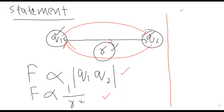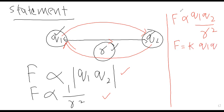Now combining both statements: what is directly proportional goes to the numerator, what is inversely proportional goes to the denominator. So F is proportional to Q₁Q₂ / r². Removing the proportionality sign, we introduce a constant k, giving F = kQ₁Q₂ / r². What this constant k is and how force can vary — all these things we will continue in the third lecture. I hope today's lecture was clearly understood. If you have any confusion, you may ask in the comment section. Dear students, Allah Hafiz.